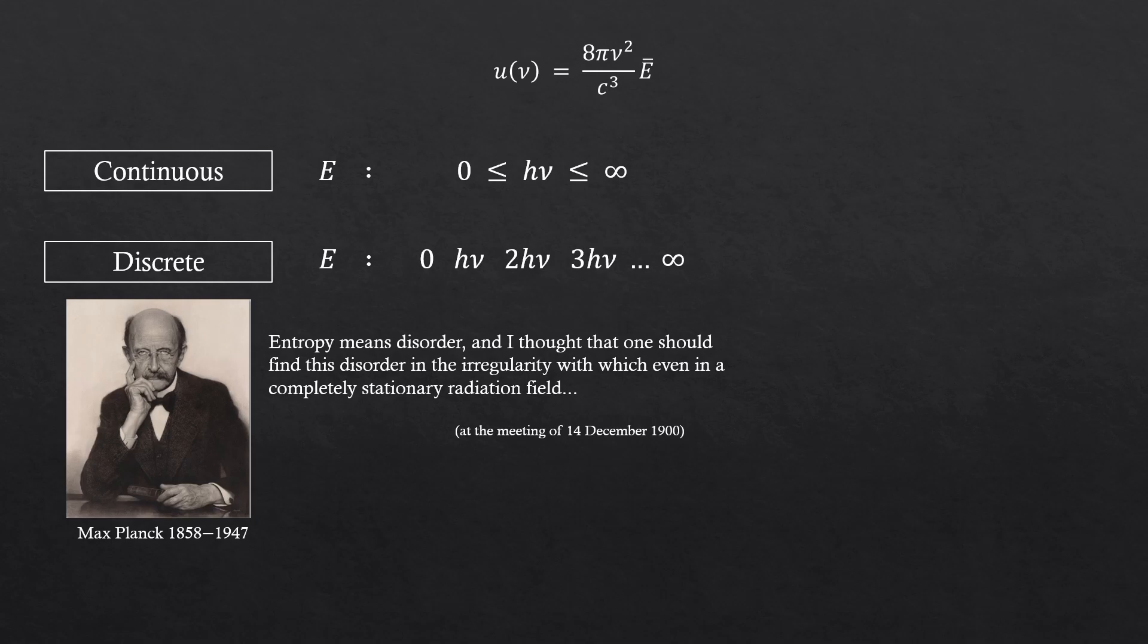So this suggests that treating energy as a discrete variable is appropriate. In other words, by quantifying the energy level, we were able to avoid the ultraviolet catastrophe.